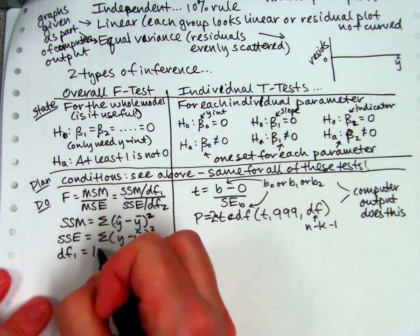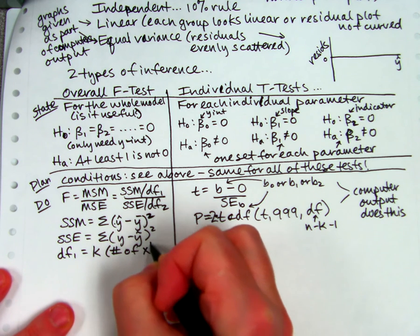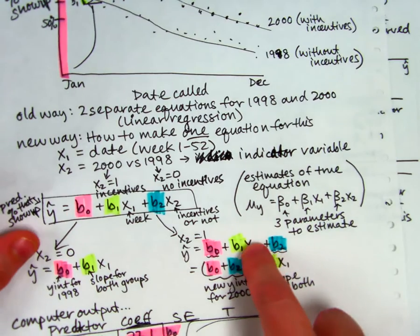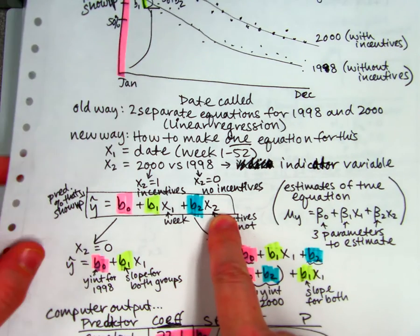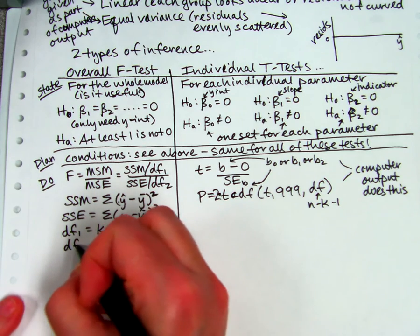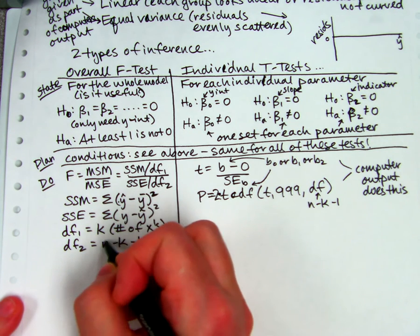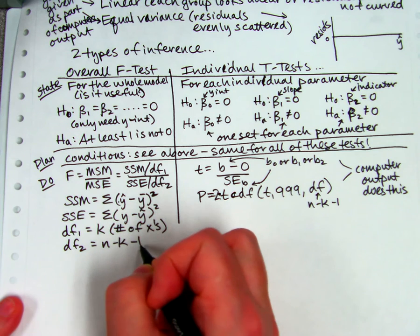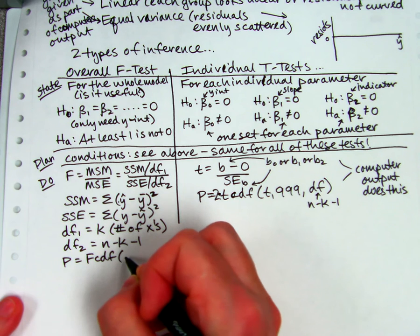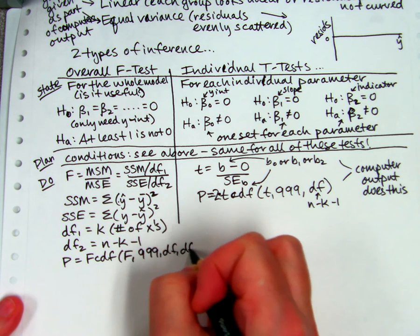DF1 is k, which is the number of x's, or number of explanatory variables you have. So on the type that we were talking about in 14.1a, we would have x1 and x2, and so k would be 2. DF2 is the same as over here. It's n minus k minus 1. So total sample size minus how many x's you have minus 1. And it's complicated, and you don't have to worry about it. And then you would find p with fcdf if you were doing it that way. But the calculator, the computer is going to give you all that.